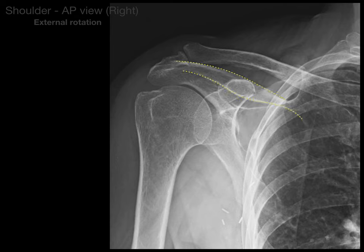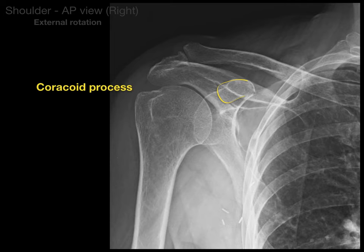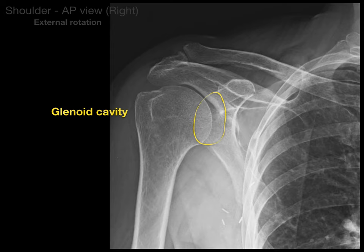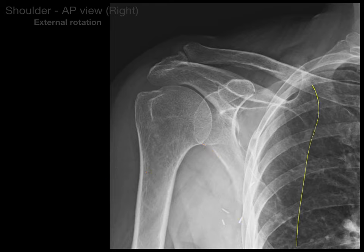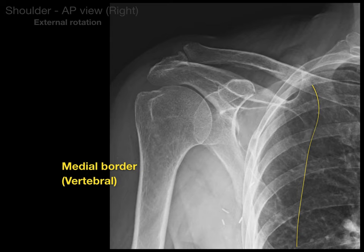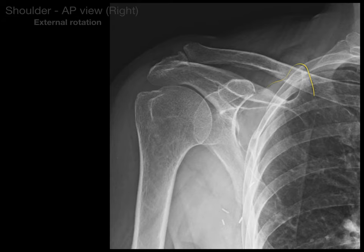That prominent structure is the spine of the scapula — a very prominent surface landmark on the back of the shoulder blade. Anatomists noted it looked like the beak of a crow, so they called it the coracoid process, which serves for muscle attachments. Then we see the glenoid cavity, also known as the glenoid fossa, which forms the socket of the ball and socket joint of the shoulder. We also see the lateral border of the scapula, also called the axillary border, and the medial border, also called the vertebral border. At the very top is the superior angle of the scapula, where levator scapulae attaches.